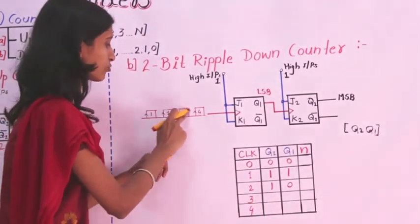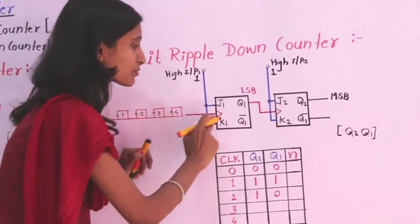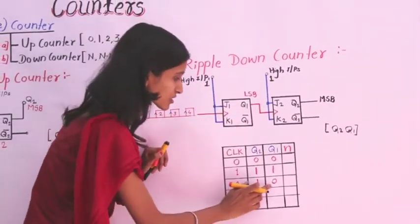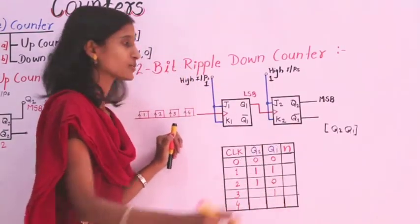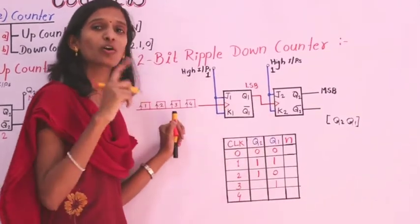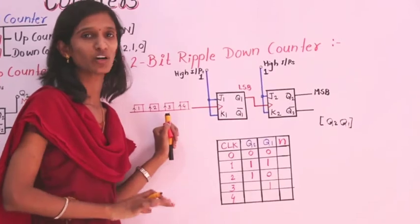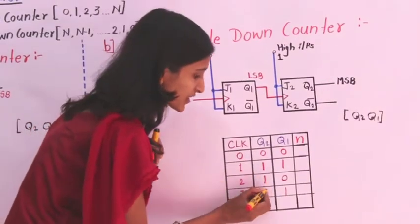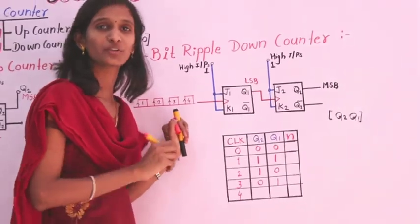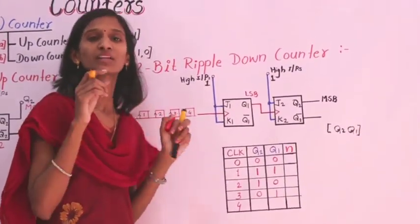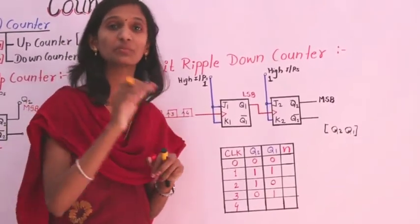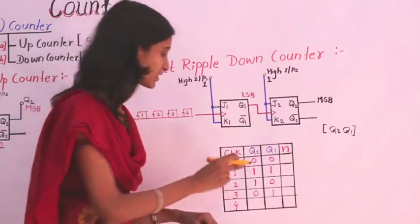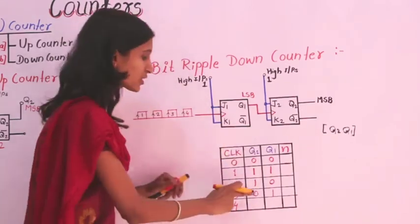For the third clock cycle applied to the first flip-flop, Q1 was 0, so it toggles to 1. This 1 is given as the clock pulse to the second flip-flop, which then triggers and operates in toggling mode. The second flip-flop's previous state was 1, so it changes to 0. We get Q2 = 0 and Q1 = 1.